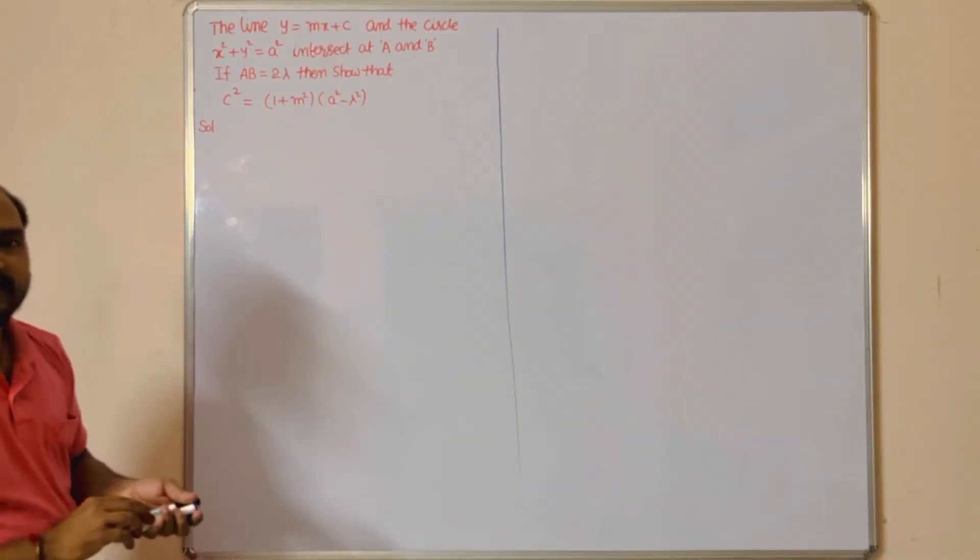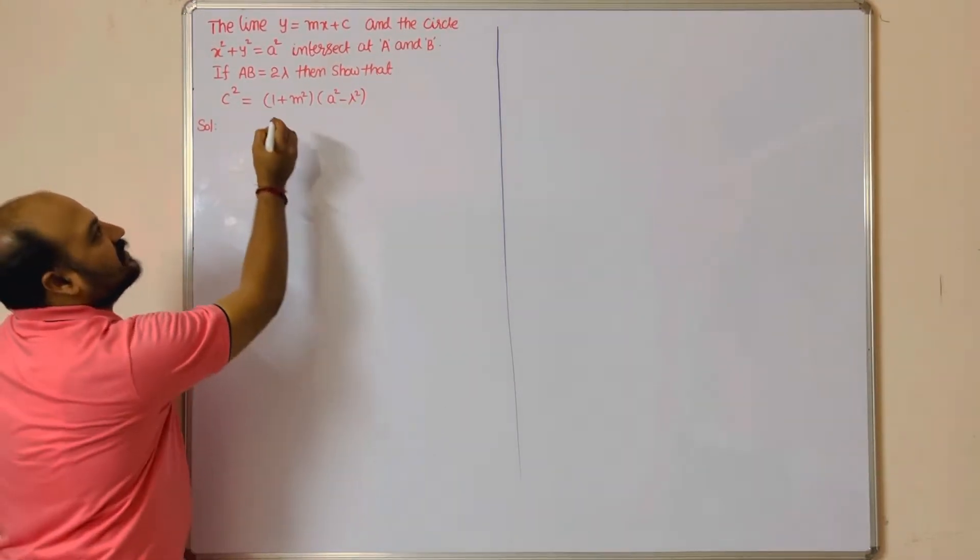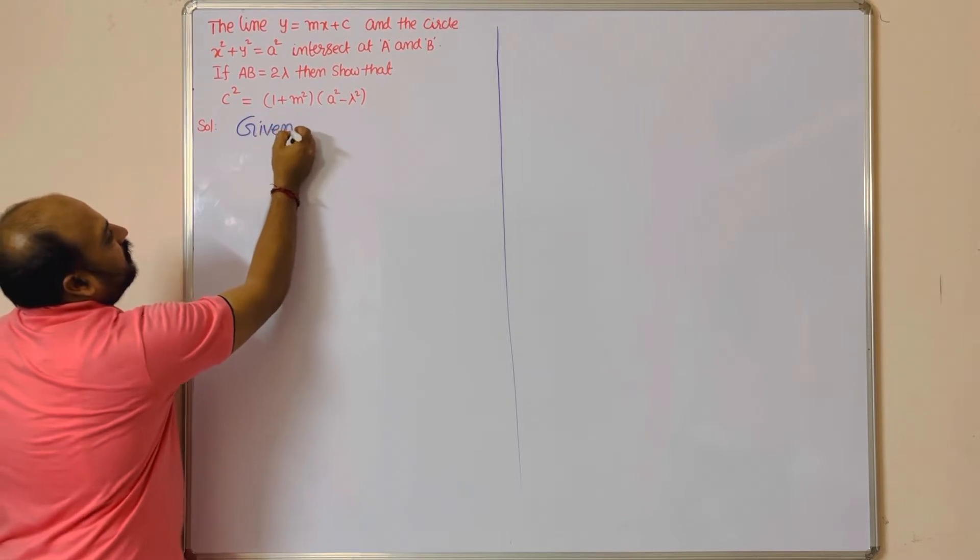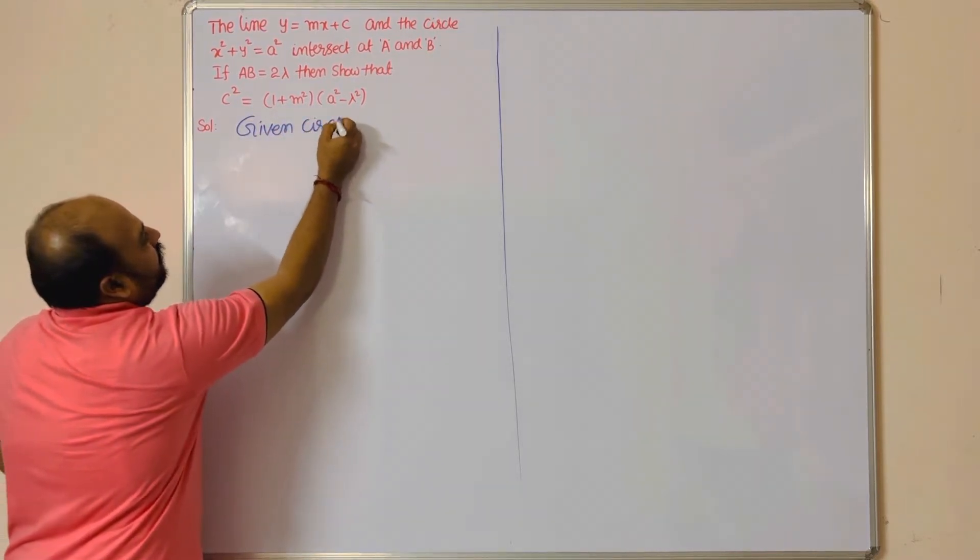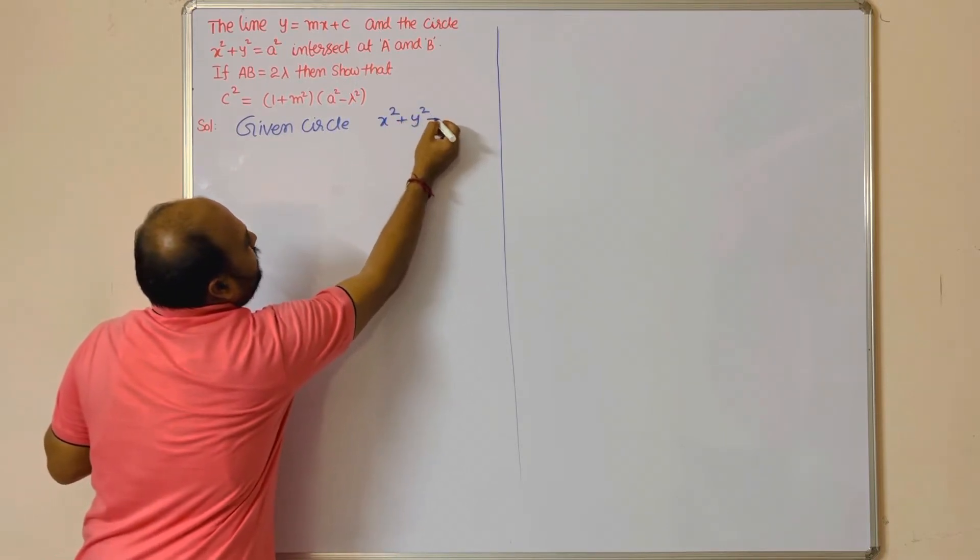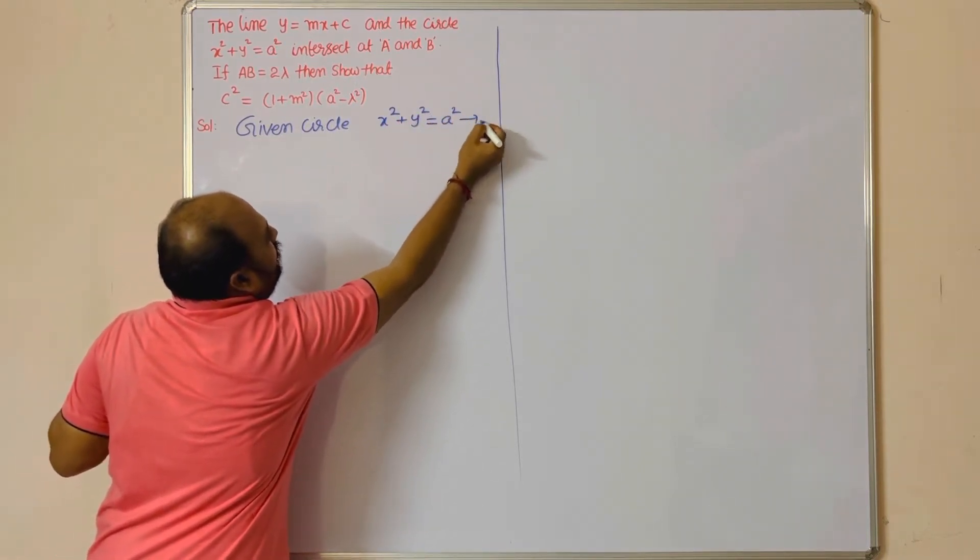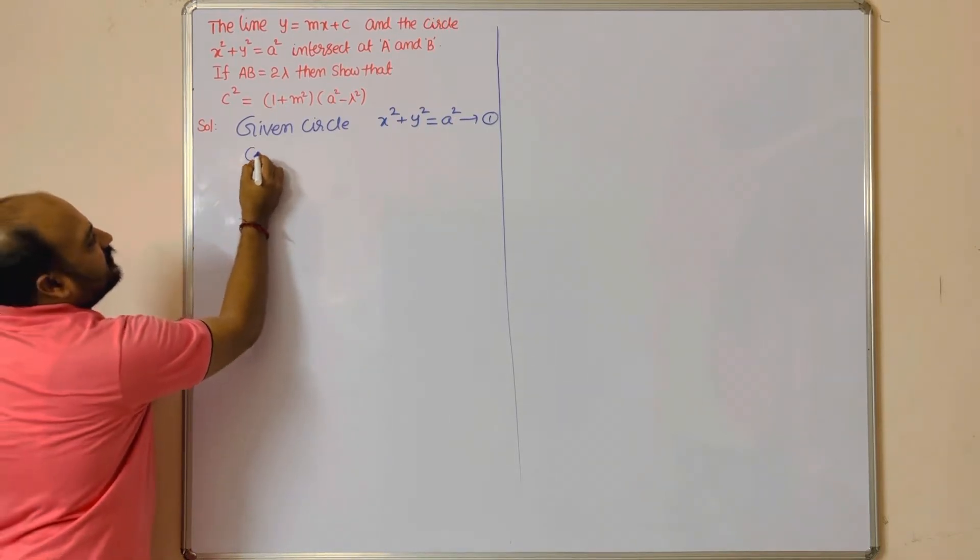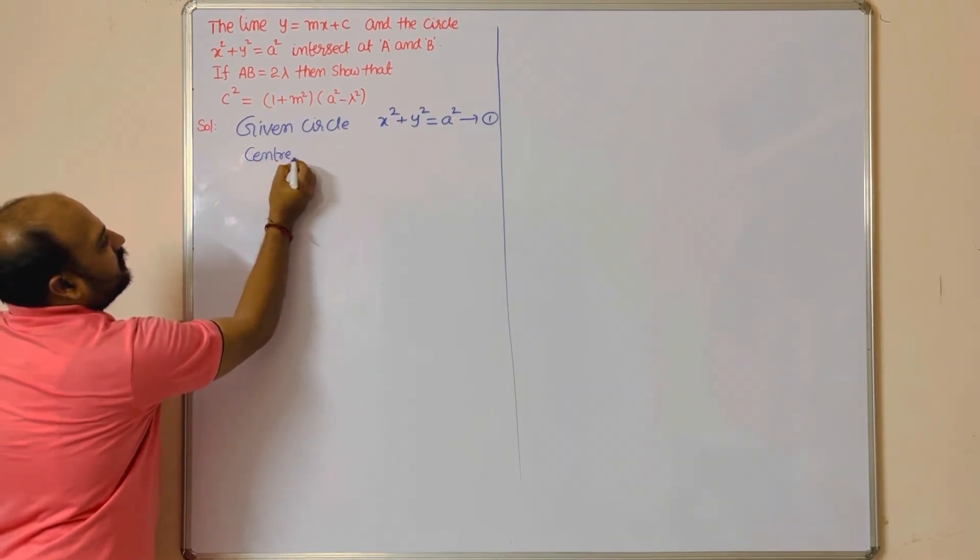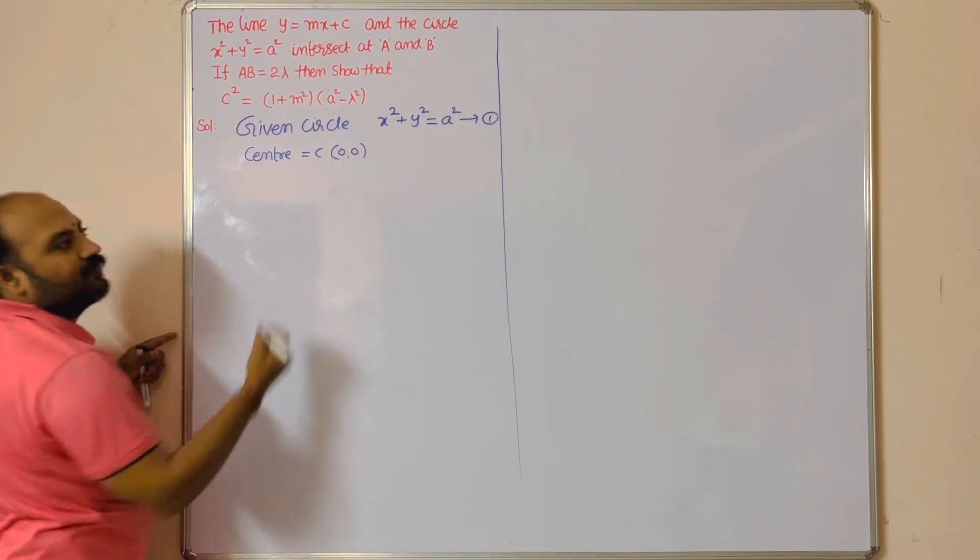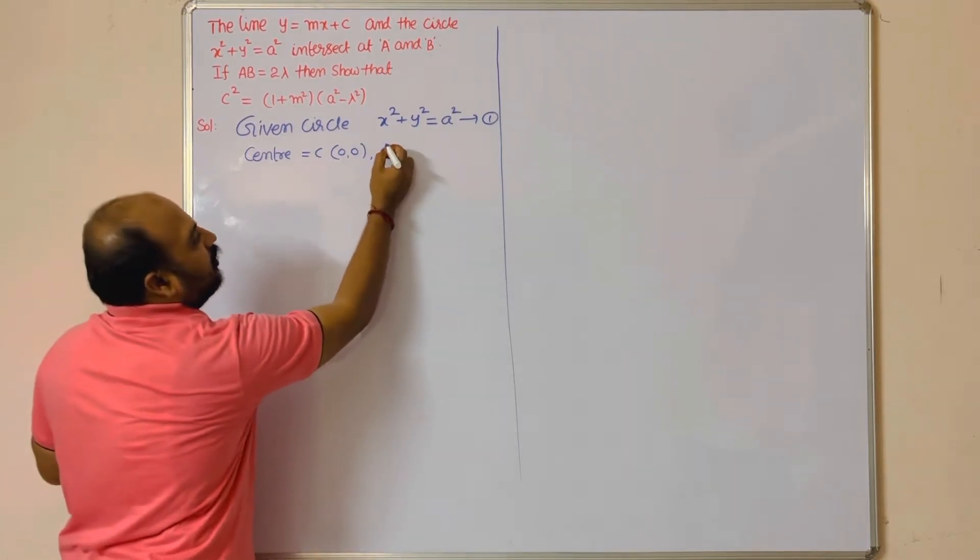First step: given circle x² + y² = a². Put that as equation number 1. Write center and radius. Center of equation 1: C = (0, 0). Radius r = a. We got the r value and center.